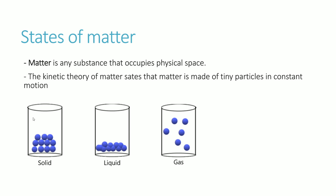Particles can be arranged very closely and tightly packed together, still moving but more like a strong vibration at a fixed position — that arrangement is a solid. In liquids, molecules are slightly further apart and can slide over one another, still in constant motion. In a gas, the separation between particles is very widely spread and they move around everywhere.